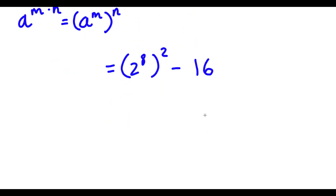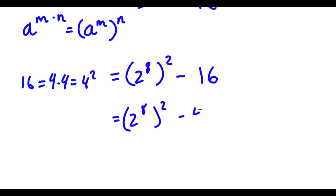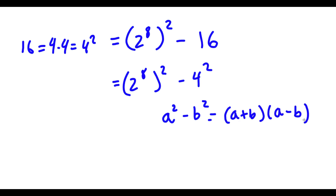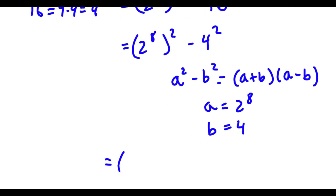Now I have this minus 16. Now 16 is the same thing as 4 times 4, which is equal to 4 squared. So now I have 2 to the power of 8, to the power of 2, minus 4 squared. Now, if I have something in the form a squared minus b squared, this is equal to a plus b times a minus b. So in this case, a is equal to 2 to the power of 8 and b is equal to 4. So I have 2 to the power of 8 plus 4, times 2 to the power of 8 minus 4.